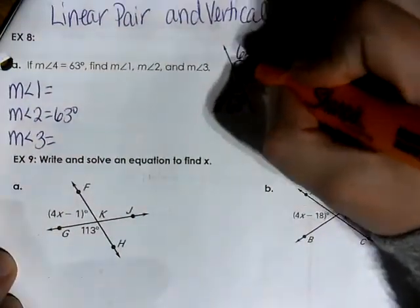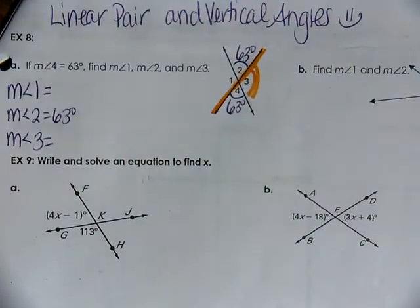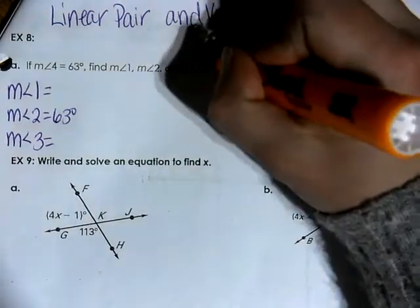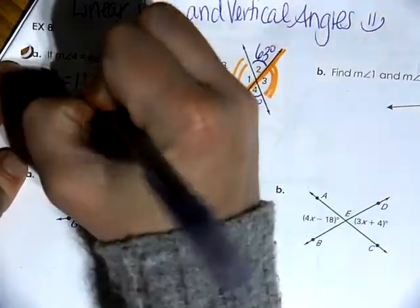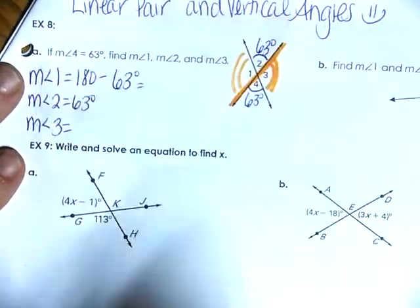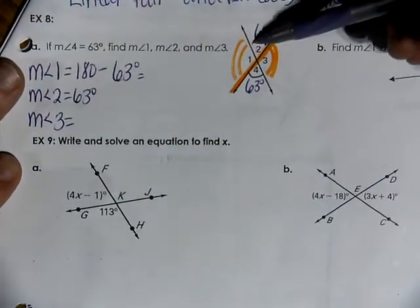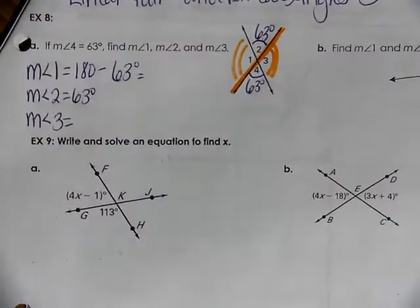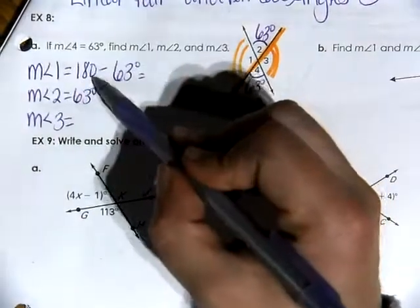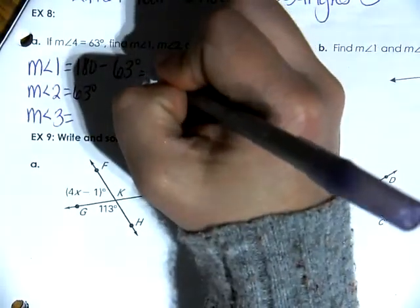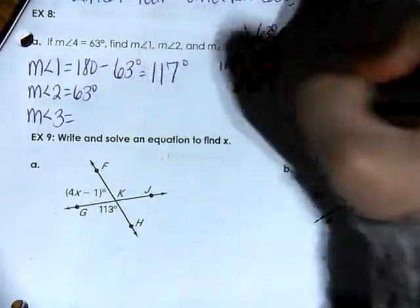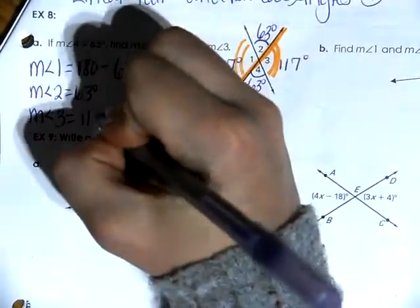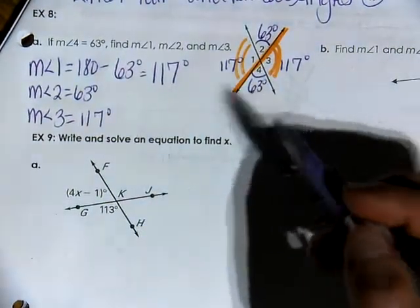Angle three and angle four are a linear pair with each other. I also know that angle one and angle four are a linear pair with each other. Because they are a linear pair, we know that they add to equal 180. So the measure of angle one is going to be 180 minus 63. I can also say that angle one and angle two are a linear pair, and angle two and angle three are a linear pair. So 180 minus 63 equals 117 degrees. Now that I know angle one is 117 degrees, I know that the measure of angle three is also 117 degrees because they are vertical angles, and vertical angles are congruent.